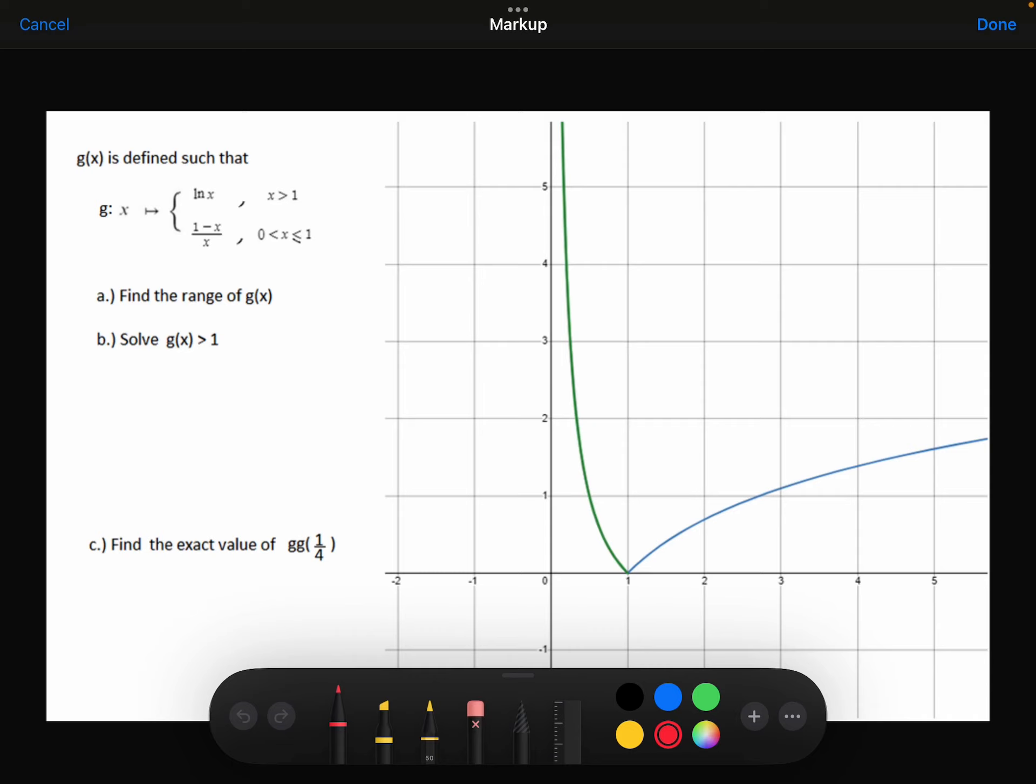Part A, find the range of G of x. Looking at the graph there, we can see that the smallest y value will be 0, and then we can see there's no upper limit to what y can be. You can see this part of the graph is getting bigger and bigger. There's no upper limit there.